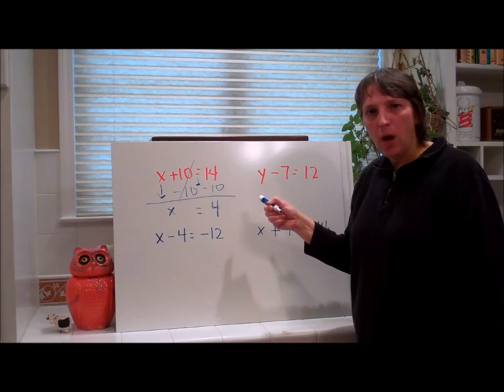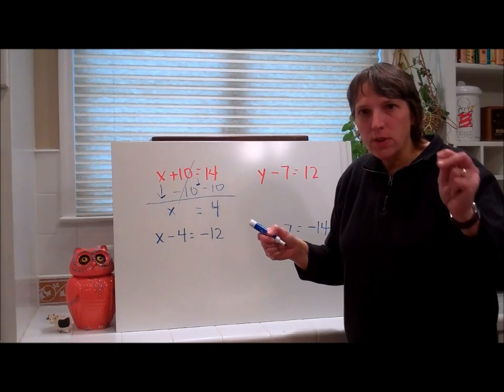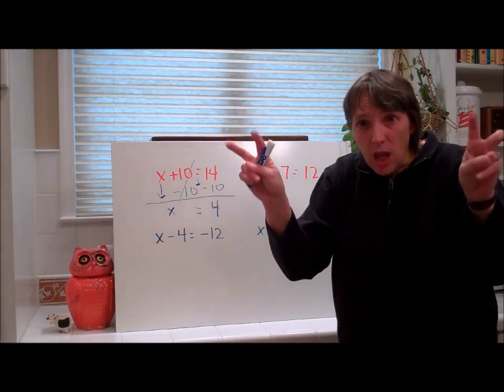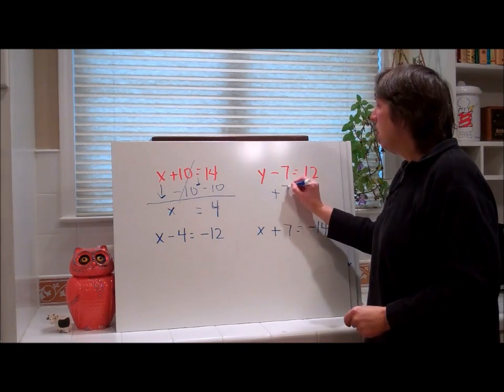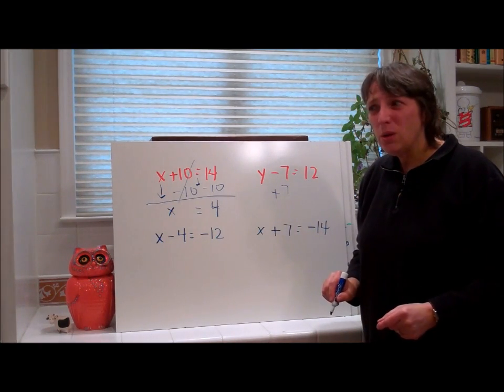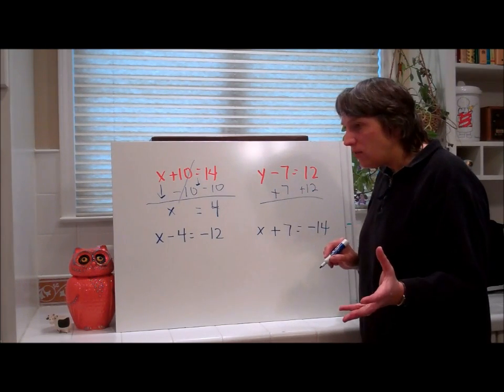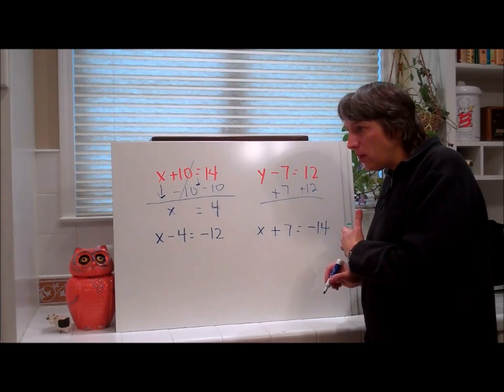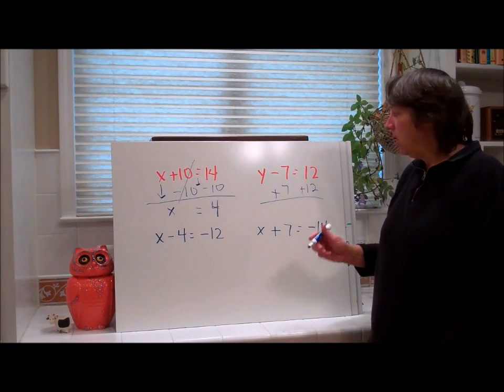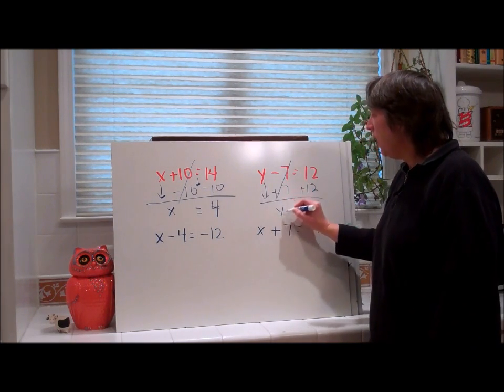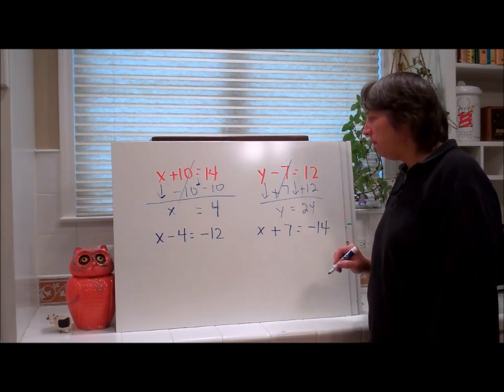We go to this one. What's being done to the y? Subtracting 7. What's the inverse of subtracting 7? Adding 7. And we must do it to both sides of the equation because whatever we do to one side of the equation, we must do to the other side of the equation to keep it balanced, to keep it fair. So the 7's cancel. We bring down the y. We bring down the equals. And 12 plus 12 is 24.